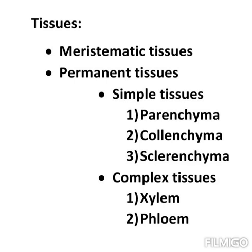The second type of permanent tissue is complex tissue. Complex tissues are made up of more than one type of cells that work together as a unit. Complex tissues consist of parenchyma and sclerenchyma cells. Note that colenchyma cells are not present in complex tissues — you should remember this point.